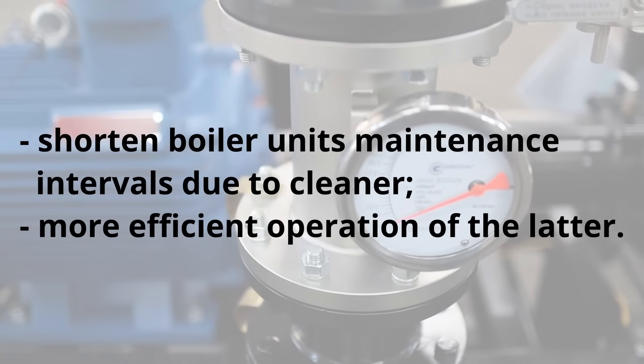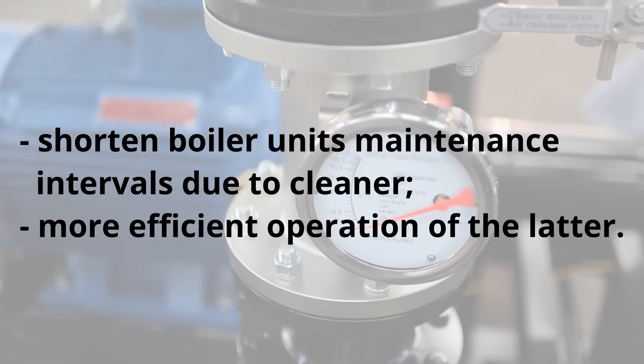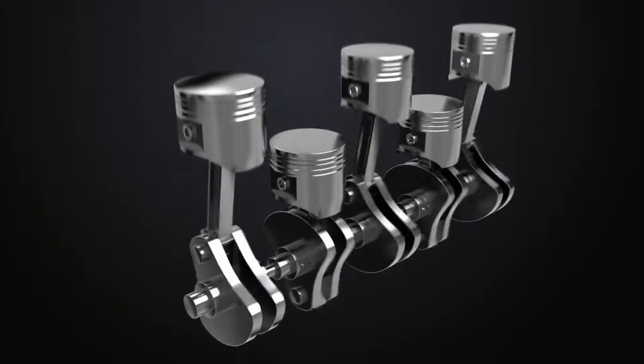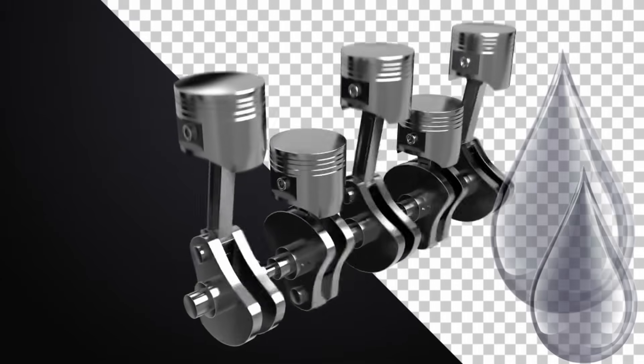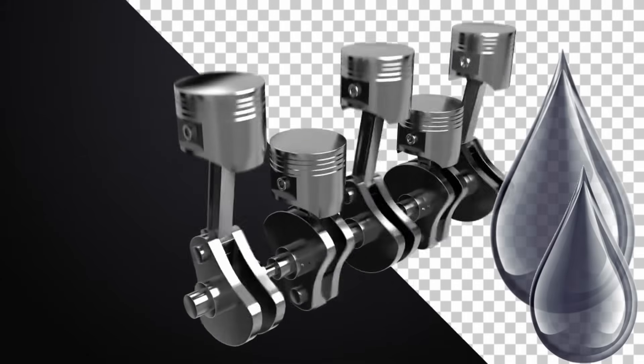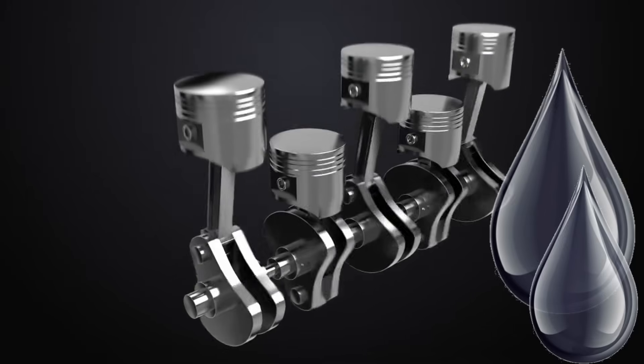In addition to the listed advantages, USB fuel oil homogenizers allow you to obtain indirect benefits. In particular, USB homogenizers shorten boiler unit maintenance intervals due to cleaner and more efficient operation. They also reduce boiler equipment downtime during regular maintenance, achieved through less contamination of parts such as pistons, piston heads, cylinder liners, exhaust valves, and turbochargers.